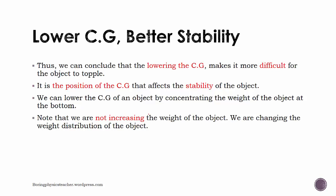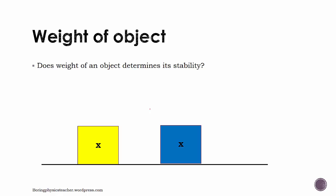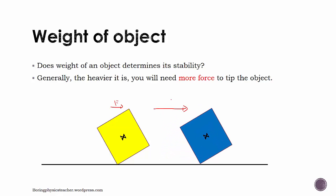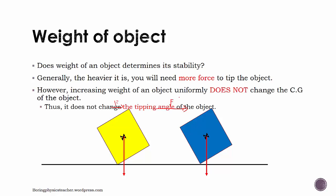Does the weight of an object determine its stability? A heavier object requires more force to tip over, but if the weight is increased uniformly it does not change the position of the center of gravity, and therefore does not change the tipping angle. So increasing the weight does not improve stability in terms of the angle at which it topples — it only makes it harder to apply the tipping force.